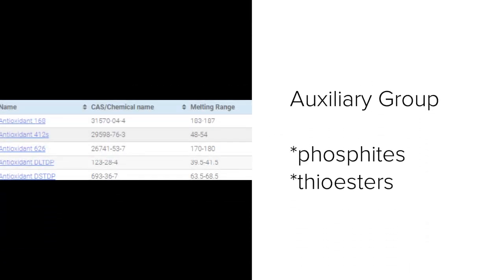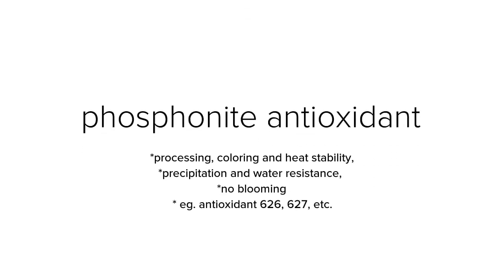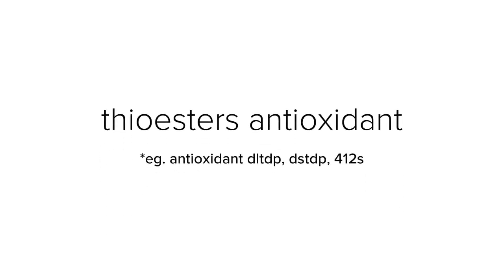Phosphonite antioxidants provide excellent processing, coloring, and heat stability, as well as precipitation and water resistance with no blooming, and they improve the transparency of the article. Typical phosphonite antioxidants are 626 and 627. Thioester antioxidants include DLTDP, DSTDP, and 412S.